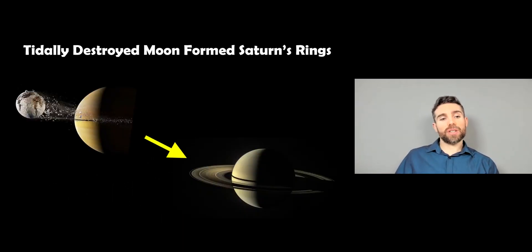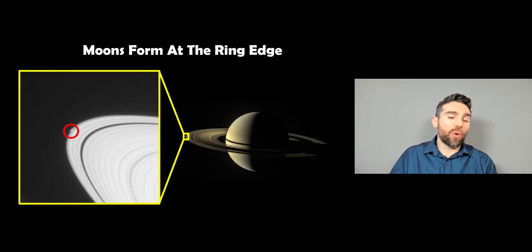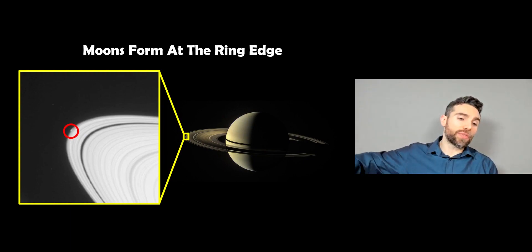Saturn's moons, quite a lot of them formed from the tidal destruction of a moon that got too close. It was pulled apart. It then created the extensive ring system that we can still see today. Then what actually happens from that point is that moons form at the ring edge and then they drift out.